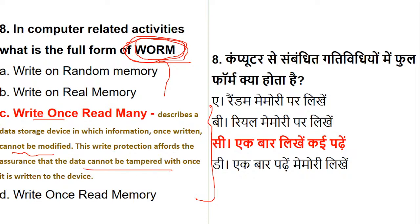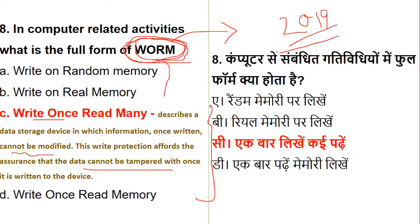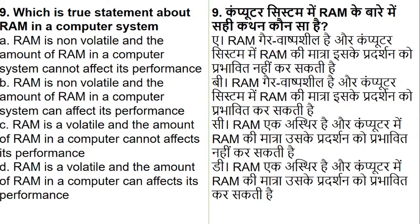Write Once Read Many describes a storage device where information written once cannot be modified. This write protection provides assurance that data cannot be tampered with after it has been written on the device. Even if you get a general question about computer-related activity rather than the acronym itself, it is about a storage device whose written information is tamper-proof.